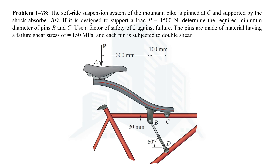Hello everyone. In this video we are going to solve problem number 78 which is related to the chapter on shear stress from the book Mechanics of Materials by R.C. Hibbeler. We are asked to calculate the minimum diameter of pins at B and C of this mountain bike, which is designed to support a load of 1500 Newton force with some other supplementary data.